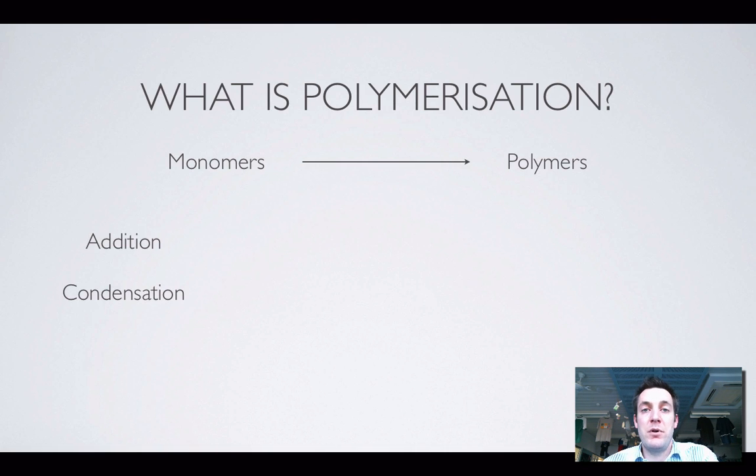And there's two different types of polymerization. There's addition polymers which require a carbon-carbon double bond, and there's condensation polymers which involve the loss of a small molecule like water. Addition just takes monomers and joins lots of them together. Condensation takes monomers and joins them together but there's a side product which is this little molecule that gets lost.